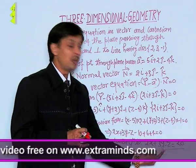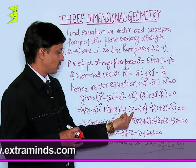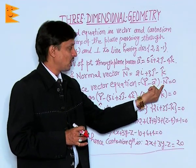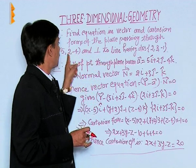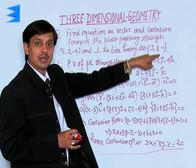This is free from i, j, k so it is Cartesian form. Or you can say this is vector form with the help of this formula, under the condition that it is passing through this point and the normal has these direction ratios.